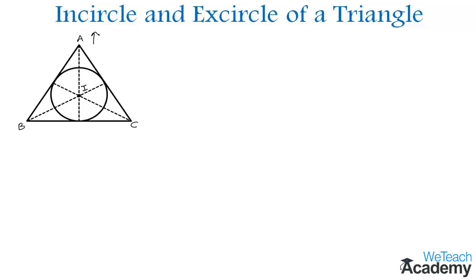Here, I is equidistant from all the sides of a triangle and the in-radius is denoted by R.